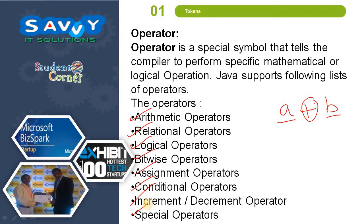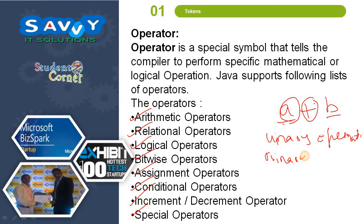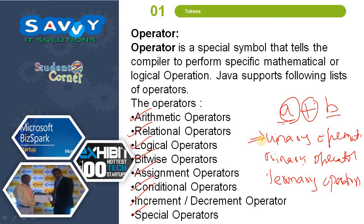Apart from these categories, based on the number of operands, operators are classified into three types: unary, binary, and ternary. A unary operator performs an operation on only one operand — for example, increment and decrement operators. A binary operator performs an operation on two operands — examples include arithmetic, relational, logical, bitwise, and assignment operators. A ternary operator performs an operation on three operands — the example is the conditional operator.